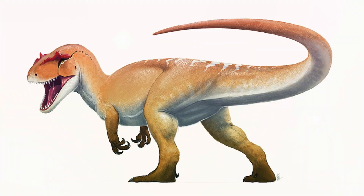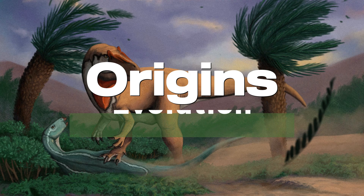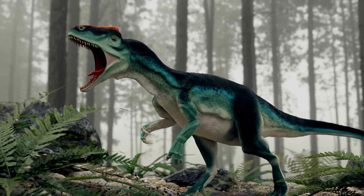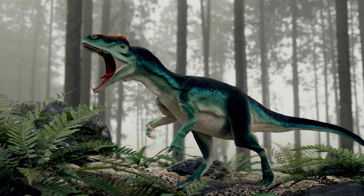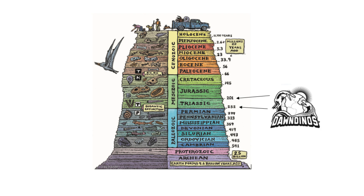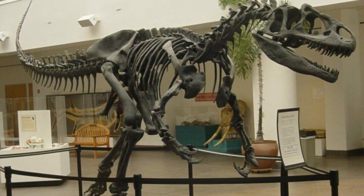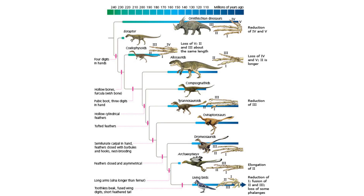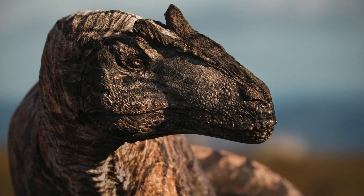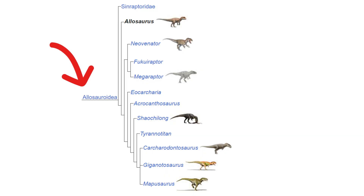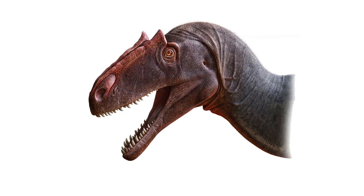Let's get into the video, starting off with this creature's origins. The Allosaurus is a well-known genus of large theropod dinosaur that lived during the late Jurassic period, approximately 160 to 145 million years ago. It was a carnivorous predator and one of the most dominant predators of its time. The evolution of the Allosaurus is part of the broader evolutionary history of theropod dinosaurs. Allosaurus belonged to the family known as Allosauridae and was characterized by its large size, sharp teeth, powerful jaws, and distinctive features such as crests and ridges on its skull.